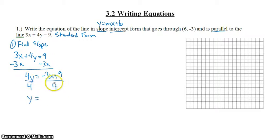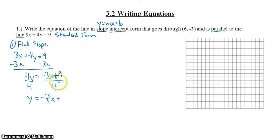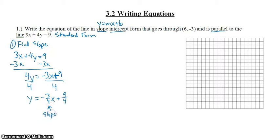When I divide both sides by 4, this division bar really means distribute — I need to distribute my division over this plus sign. Negative 3 divided by 4 is negative 3-fourths x, plus 9 divided by 4. So this equation written in slope-intercept form tells me the slope of this line is negative 3-fourths. Now if I want to create a line parallel, my new slope is going to be negative 3-fourths.